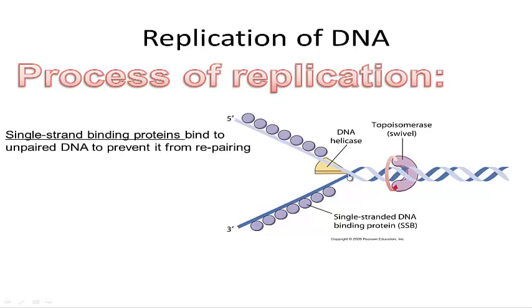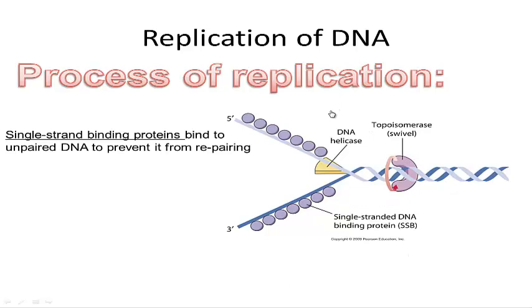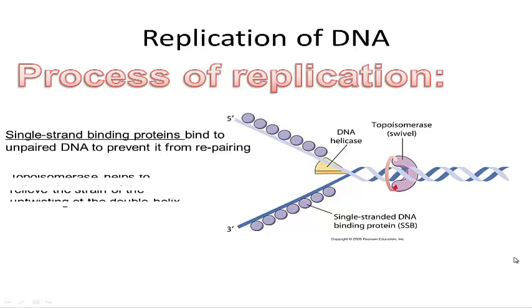Once uncoiled, we don't want the strands to coil back up. To prevent this, we use single-strand binding proteins that attach and prevent reforming. Another enzyme, topoisomerase, helps ease the process by taking stress off this joint. As DNA is pulled apart, this area gets a lot of stress. Topoisomerase swivels around and backflows the pressure, relieving stress on the joint.